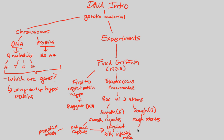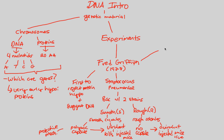Rough colonies are different — they have no polysaccharide capsule. Because of this, the immune system can very easily get rid of rough Streptococcus pneumoniae. The result is that the rough strain is avirulent, meaning without virulence. When injected into mice, the mice live. So now we have the background needed to understand the genius of Griffith's experiment.